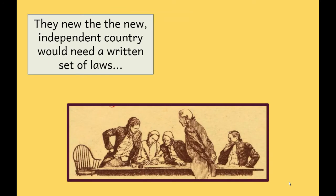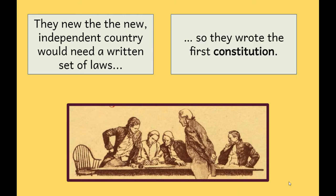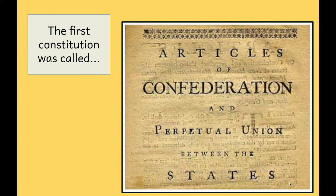They needed a new independent country with a new written set of laws, so they wrote their first constitution. Remember, a constitution is a written set of laws. The first constitution was called the Articles of Confederation and Perpetual Union Between the States. Today when we're talking about it, we just use those first three words — Articles of Confederation. This was our first constitution, our first written set of laws for the country.